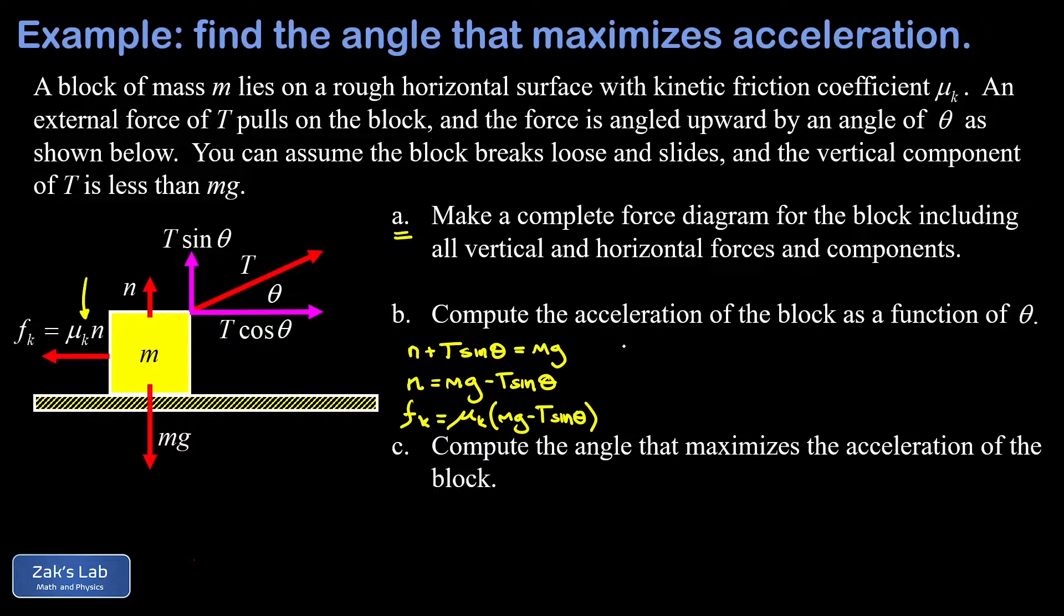We're going to call rightward positive here, so F_net is T cos theta minus the force of friction, which is mu_k(mg minus T sin theta). This is going to be equal to the mass of the block times its acceleration in the x direction. We could call that a_x, but it's not too confusing to just leave it as a.